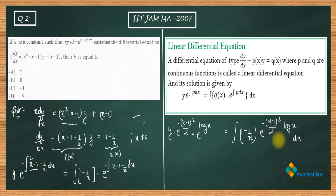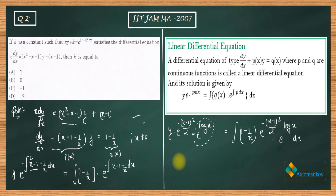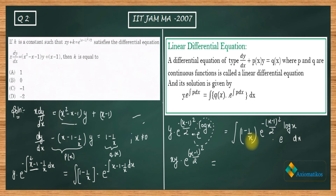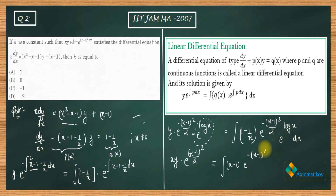Since e^(log x) equals x, the left side becomes x · y · e^((x−1)²/2). On the right side, the x from e^(log x) cancels with the x in the denominator from (1 − 1/x), and we are left with integrating (x − 1) · e^(minus (x−1)²/2).